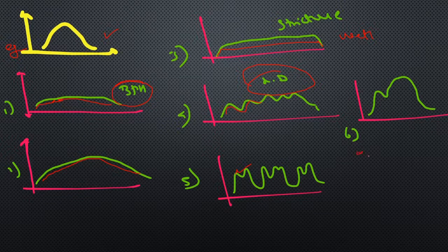In female bladder neck insufficiency, this kind of initial obstruction followed by full flow will be seen. These are all the different kinds of graph patterns we might get in flow graphs.